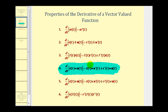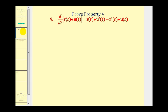In part two of this video we'll take a look at verifying property number five. So let's see if we can prove property four. We want to show that the derivative of the dot product of these two vectors with respect to t equals the first vector valued function dotted with the derivative of the second, plus the derivative of the first vector valued function dotted with the second.